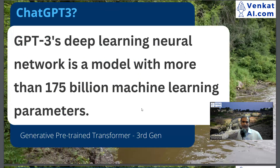ChatGPT is basically a machine which has all the knowledge of the world. The knowledge is fed in and there are 175 billion machine learning parameters. The full form is called Generative Pre-trained Transformer Third Generation.